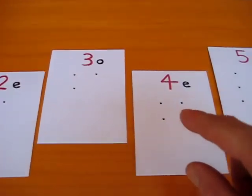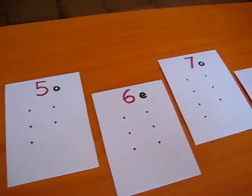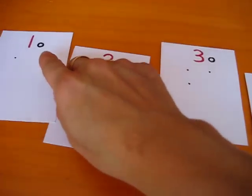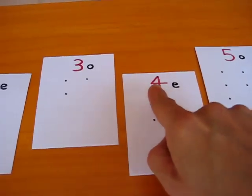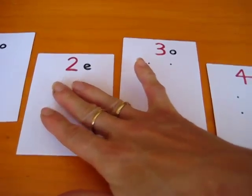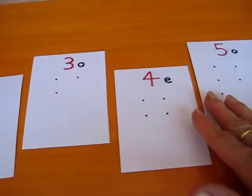So I have some cards, little card stocks with little dots on them as you can see. All our odd numbers have an O, and all our even numbers have an E for even, just to help them remember, at least to begin with.